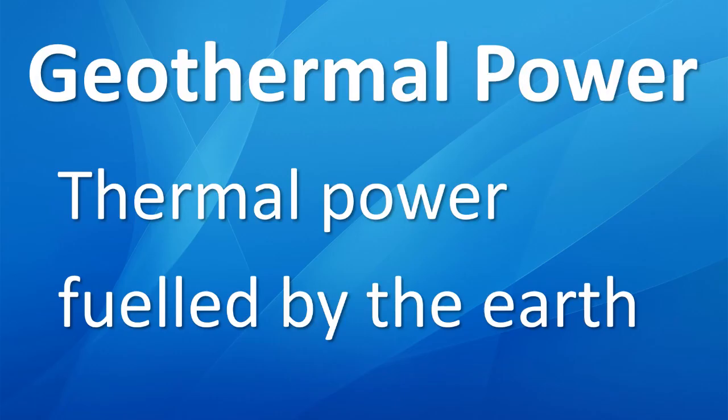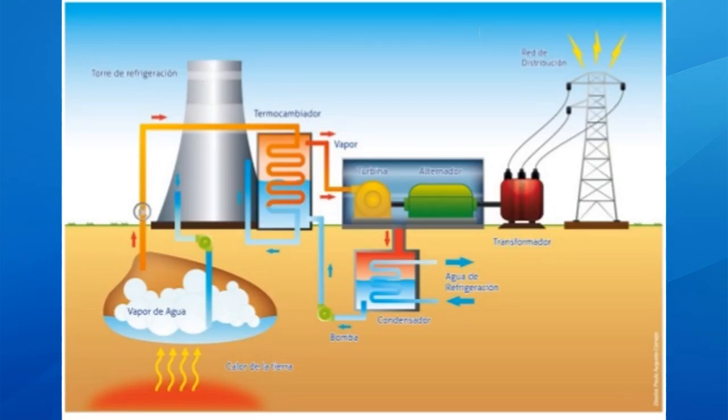Another really clever method is called geothermal power — thermal power fueled by the earth. Instead of using coal, oil, nuclear, or gas to heat water and create steam, you use the earth itself to create that steam. The earth heats water, which produces steam; that steam goes to the turbines, those turbines spin the axle, and in the generator the copper wire moves around the magnets — and then after going through the transformer, you've got power.